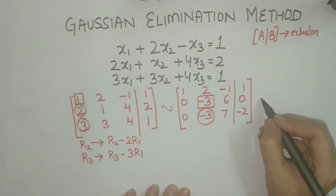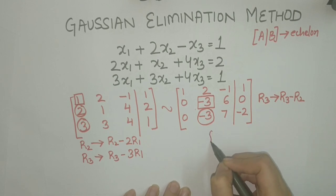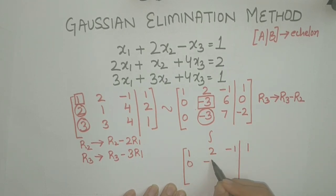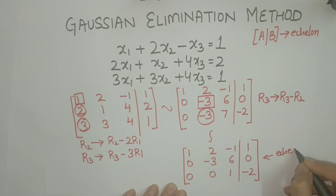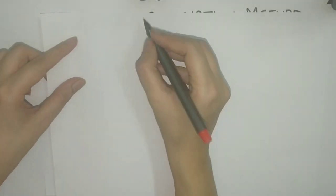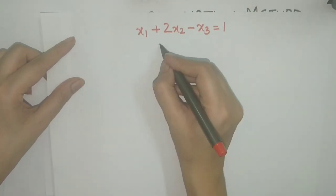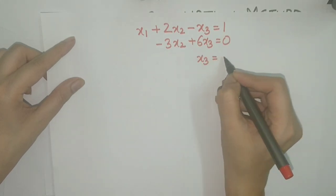This can be done by applying the row operation R3 → R3 − R2. Then the matrix becomes equivalent to [1, 2, −1 | 1; 0, −3, 6 | 0; 0, 0, 1 | −2]. This is the echelon form of the augmented matrix. From the echelon form, we can write an equivalent linear system as: x1 + 2x2 − x3 = 1, −3x2 + 6x3 = 0, x3 = −2.